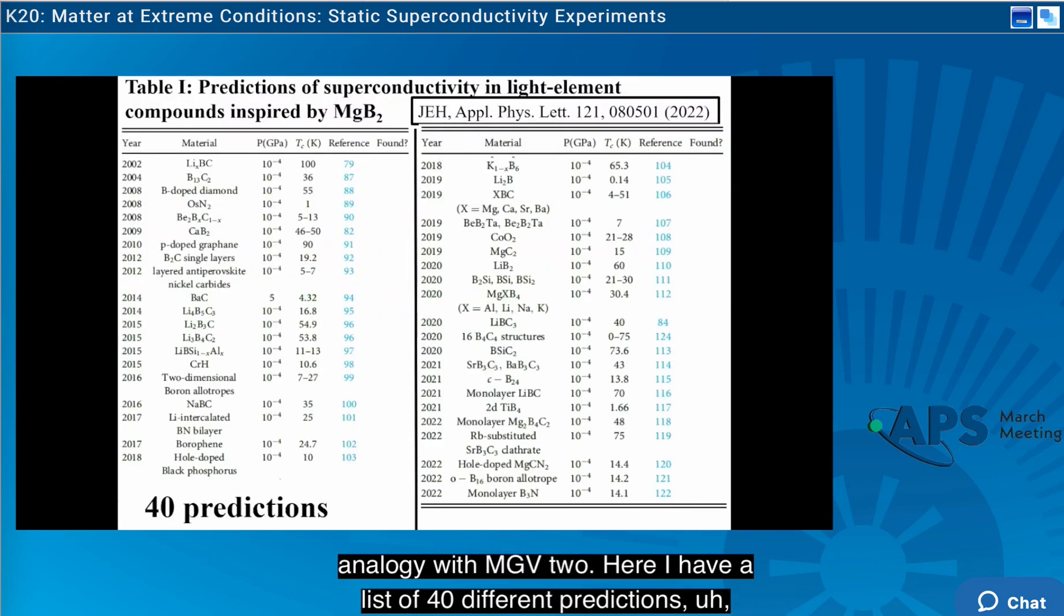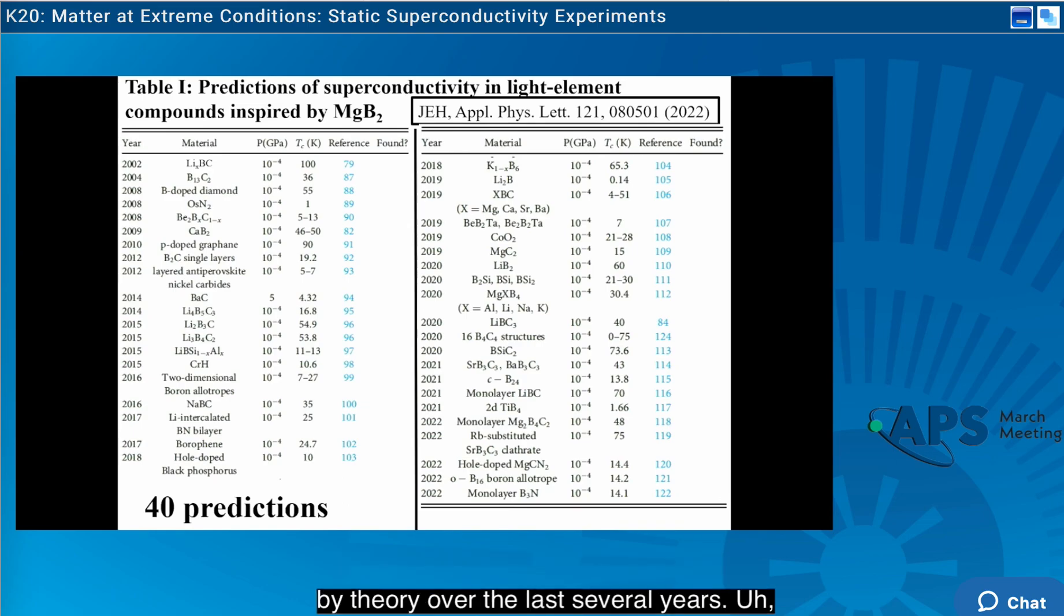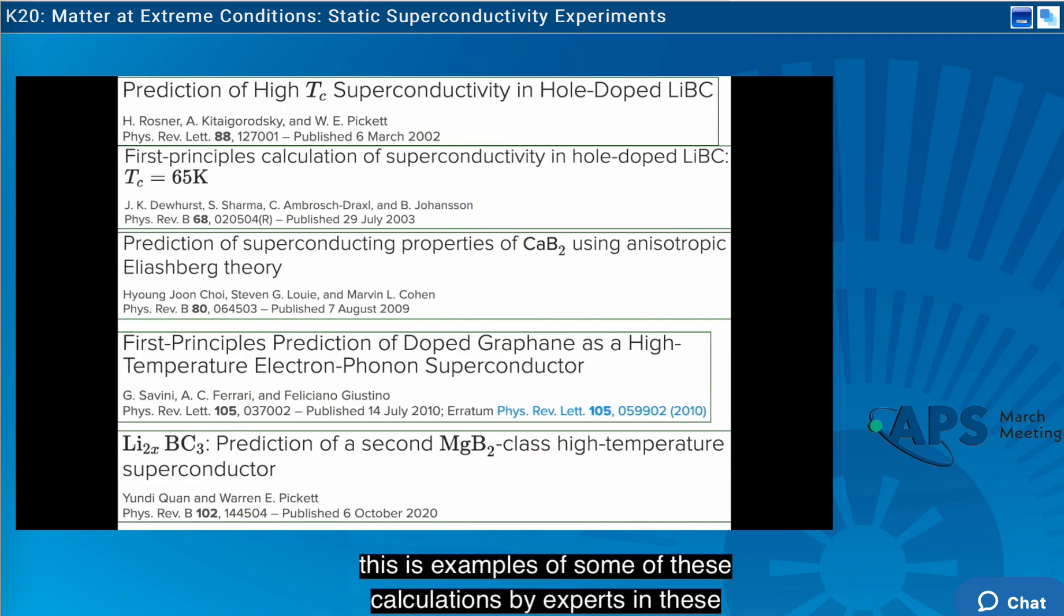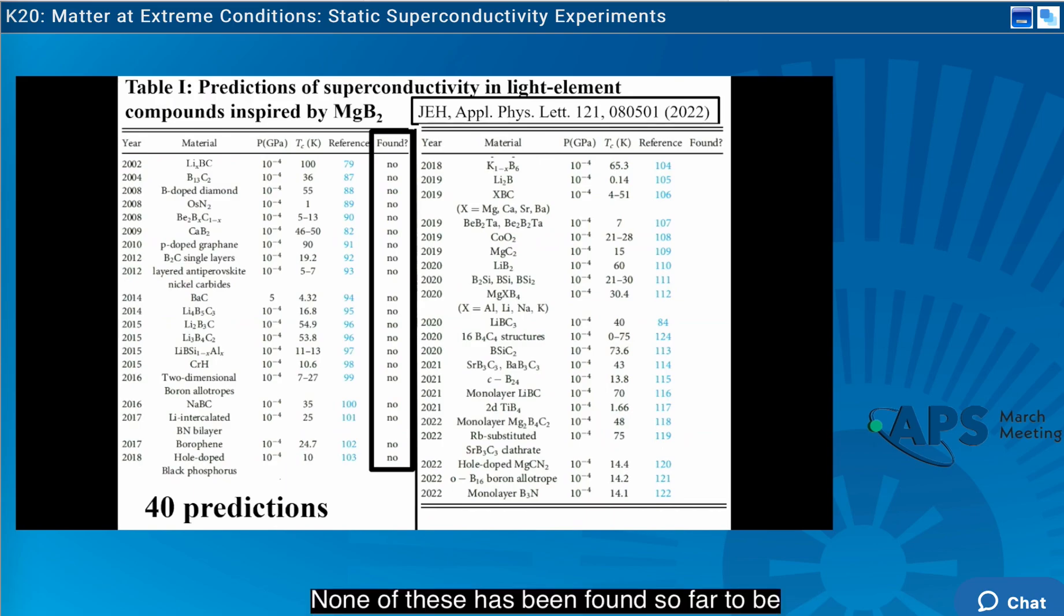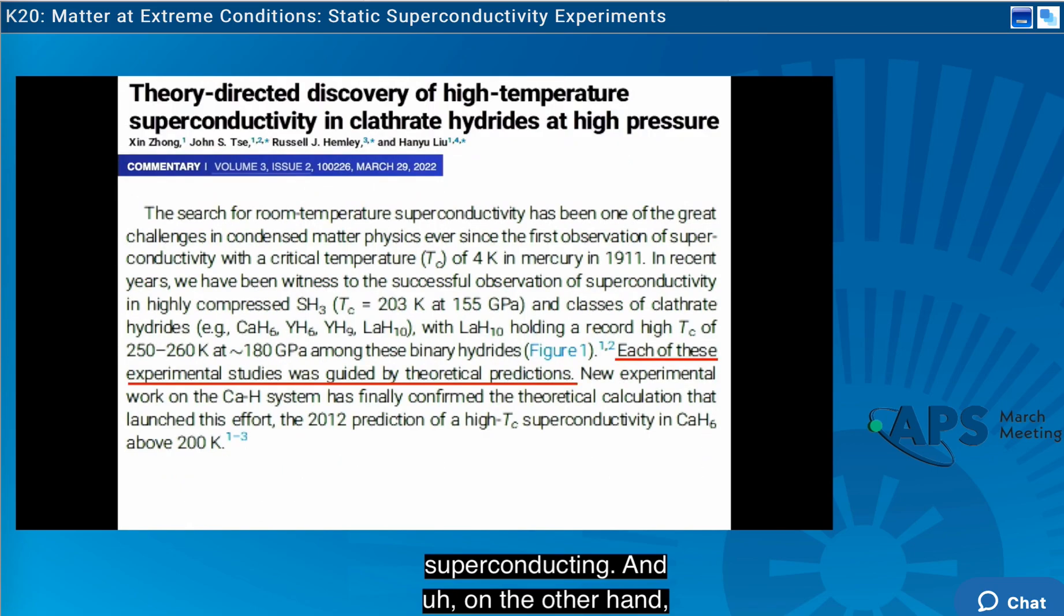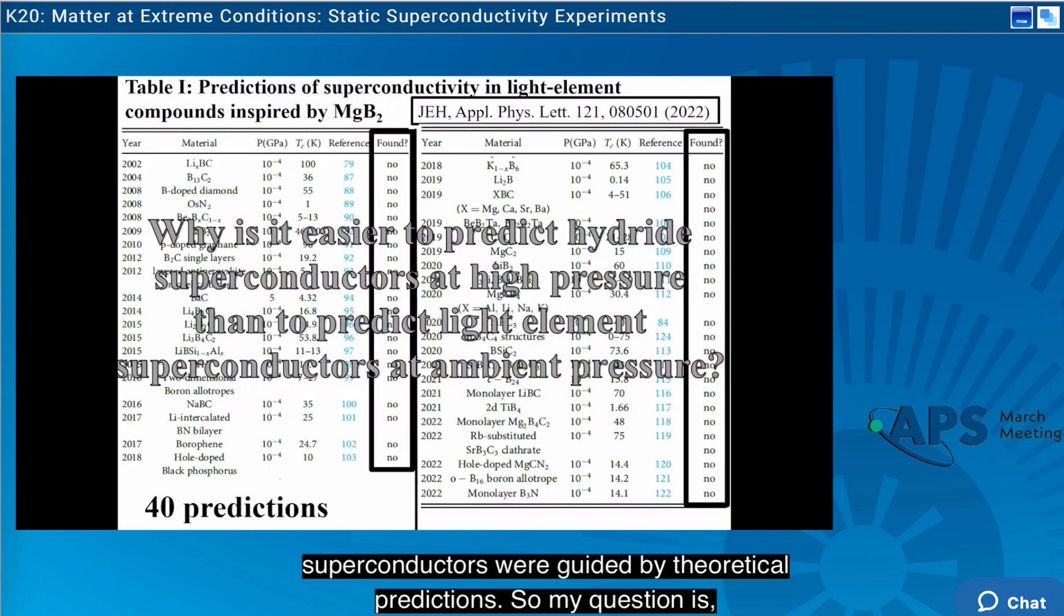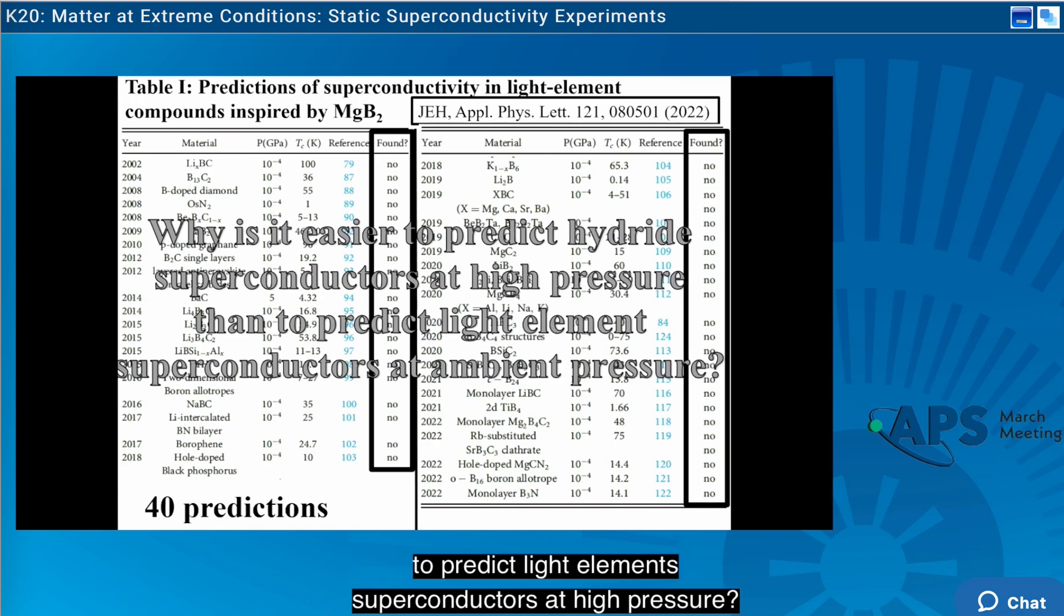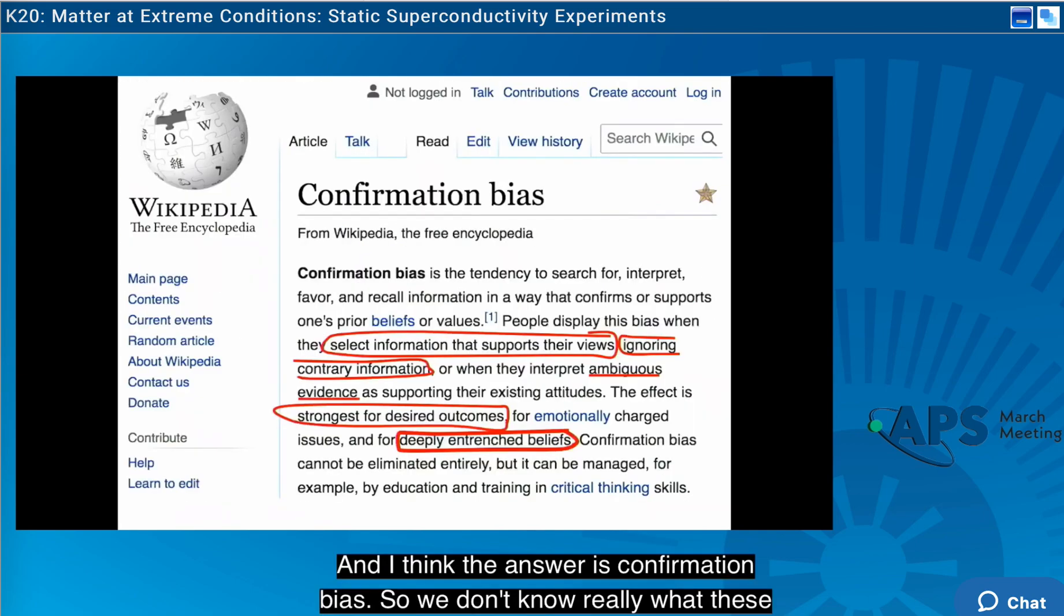Many other light elements have been predicted to be high TC superconductors in analogy with MgB2. Here I have a list of 40 different predictions by theory over the last several years. This is examples of some of these calculations by experts in these calculations. None of these has been found so far to be superconducting. And on the other hand, we are told that theory directs the discovery of high temperature superconductivity in clathrates. Each of these experimental studies that discovered all these hydrate superconductors were guided by theoretical prediction. So my question is, why is it so much easier to predict hydrate superconductors at high pressure than to predict light elements superconductors at high pressure where none have been found?